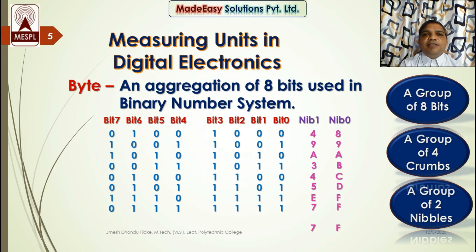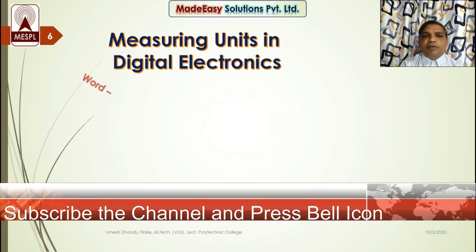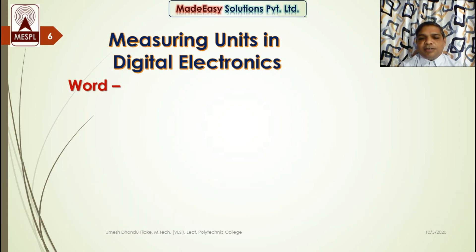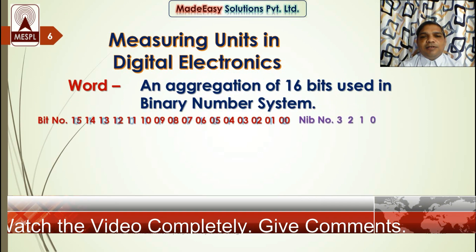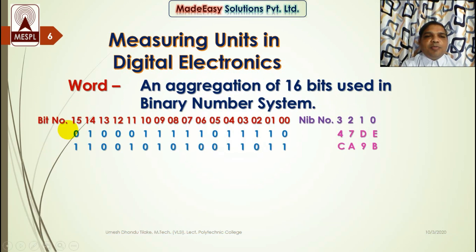The next measuring unit is a word — an aggregation of 16 bits, that means double of a byte. So 2 power 16 equals 65,536 total possible words. It is not possible to write all 65,536 words on a single slide, so I have taken just an example. You can see bit numbers 15 down to 0. This 16-bit word can also be represented in the form of nibbles — since a nibble is a group of 4 bits, 16 bits can be represented by 4 nibbles of 4 bits each.